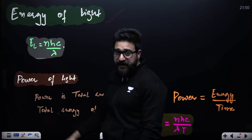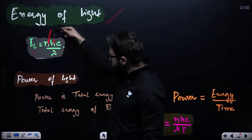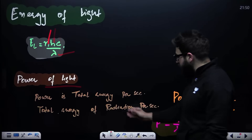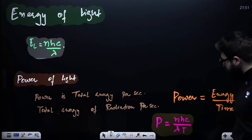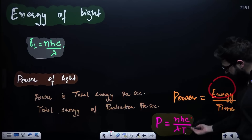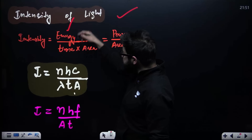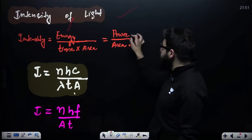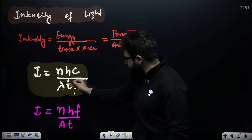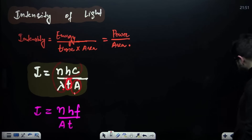Energy of light means nhc divided by lambda, where n is the number of photons, h is Planck's constant, c is speed of light, and lambda is the wavelength. Power of light is energy per second: nhc divided by lambda times t. Intensity is power divided by area, which equals nhc divided by lambda times time times area.